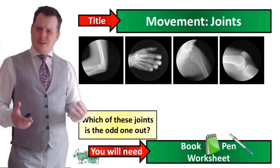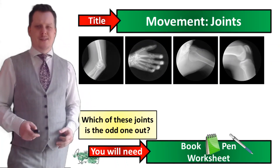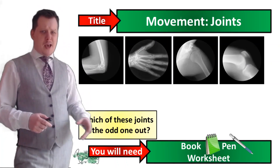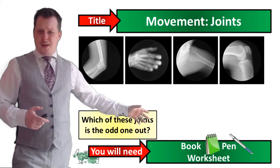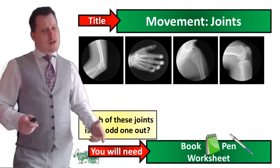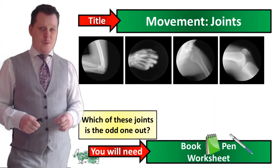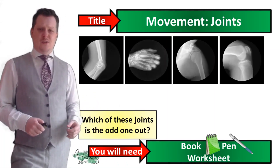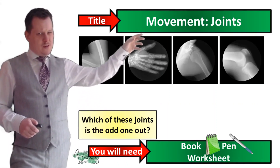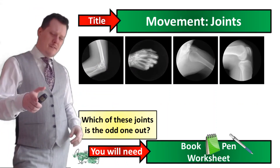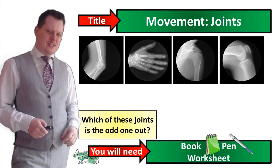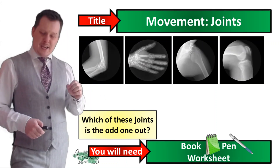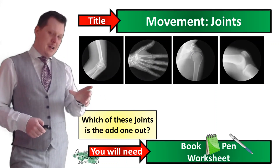Hello everybody and welcome to the third lesson on the organisation of the human body. In order to complete this lesson you're going to need a book, a pen and a worksheet which you can download in the description below for free. In your books I'd like to write down today's title which is movement, joints and for your starter activity I'd like to write down which of these four joints is the odd one out and why.